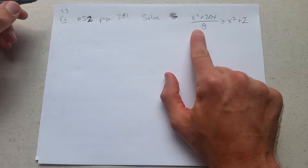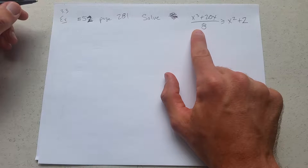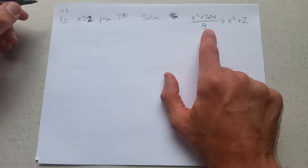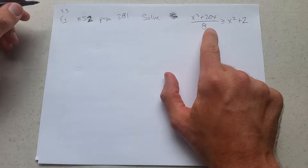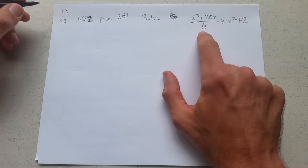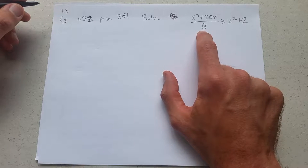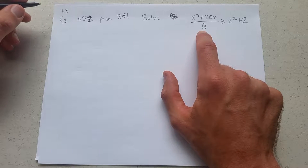I'm going to start by multiplying everything by 8. You want to be careful if you multiply by a negative, then you would flip your inequality. The good news is, no matter what x is, 8 is always positive.